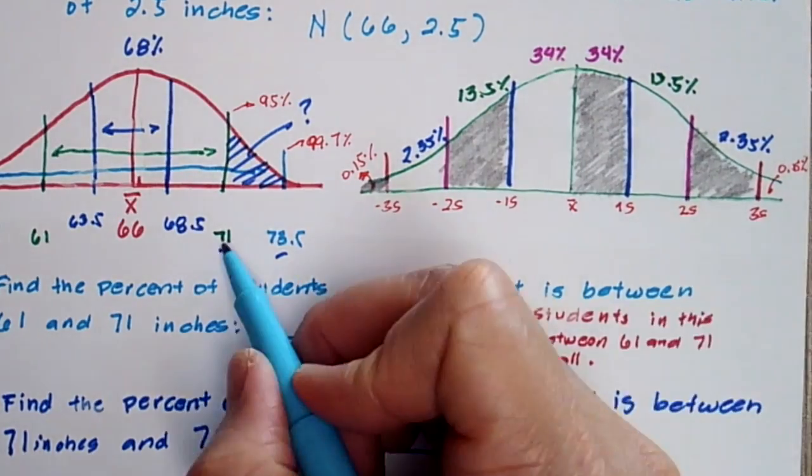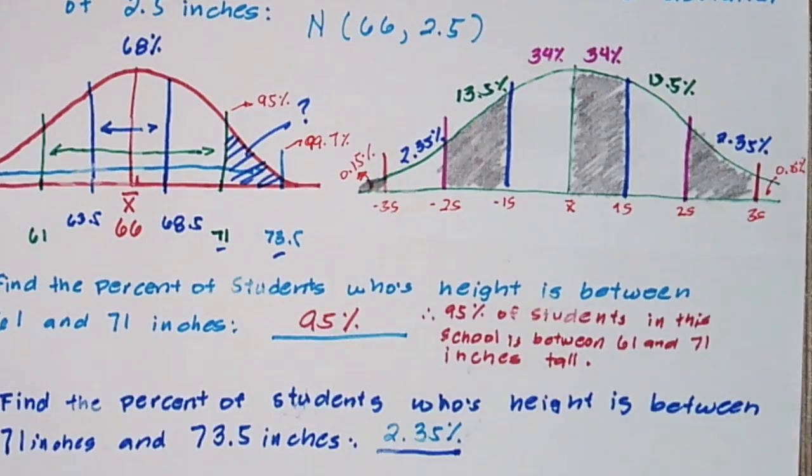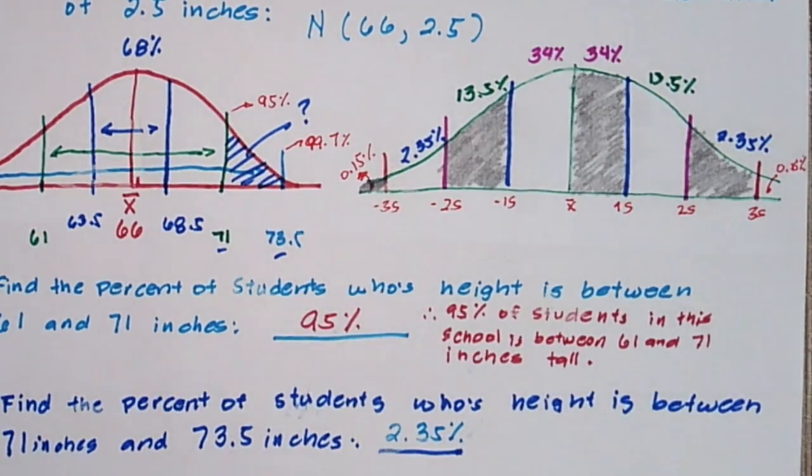So to answer the question, there is 2.35% of students whose height is between 71 inches and 73.5 inches. Lastly,